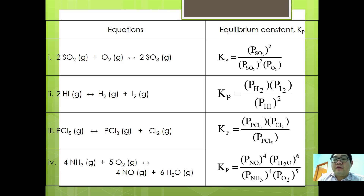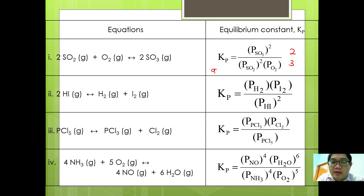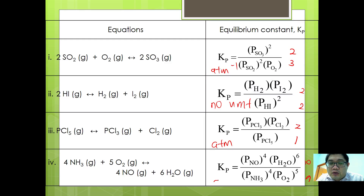The unit of Kp also varies. Assuming the unit of pressure is atmospheres: for powers of 2 over 3, the unit of Kp is atm⁻¹; where numerator equals denominator (2 to 2), there is no unit; for 2 over 1, the unit is atm; and for 10 over 9, the unit is also atm. This is how we express Kp for the reactions. That is all for the first part of the video — we continue on later. Thank you.